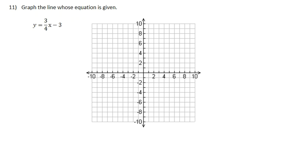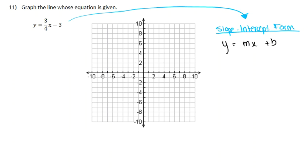Now looking at this, you can see that this line is in the form slope-intercept form, which is y equals mx plus b, where m is your slope and b is your y-intercept.